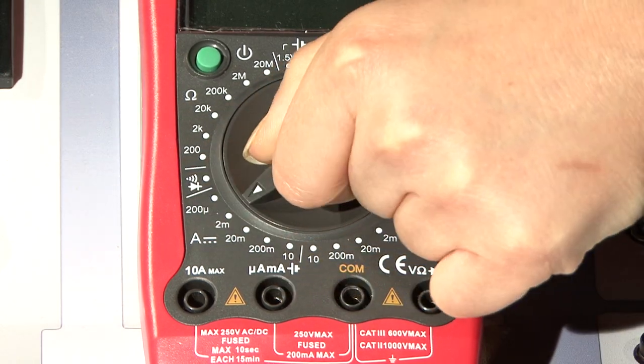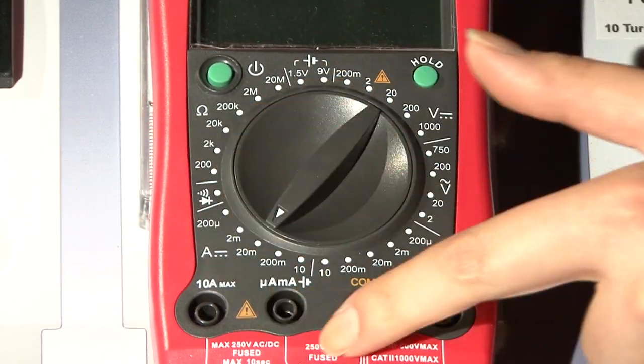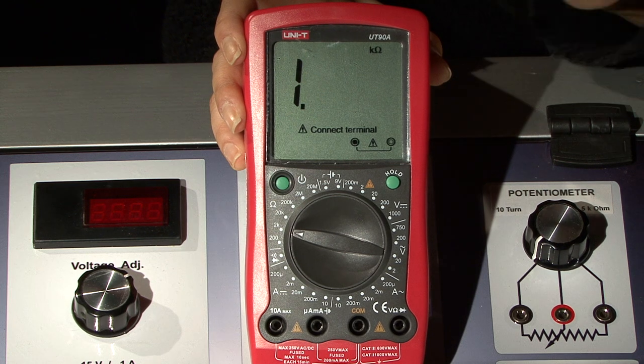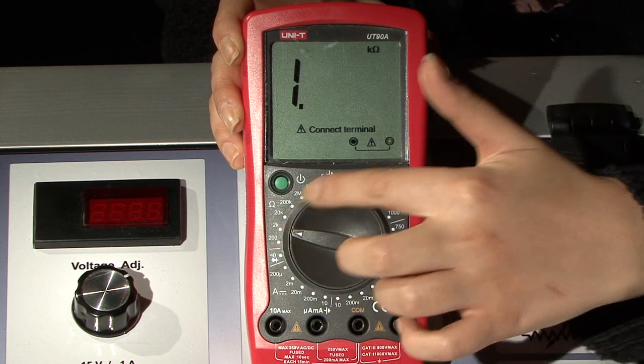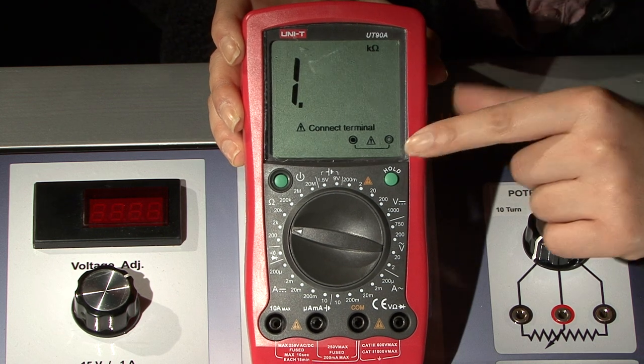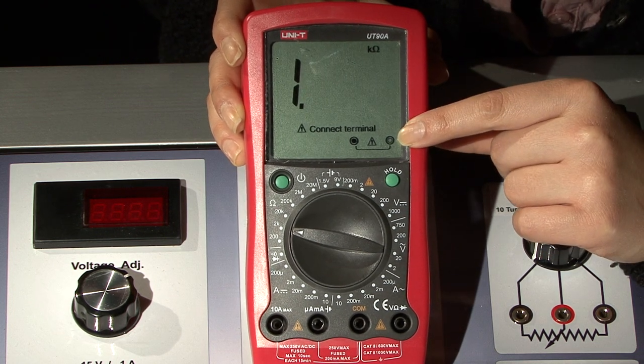And this part for measuring current in DC circuits. Let us now measure the resistance of a resistor. First, we adjust the multimeter. We see on the display where each cable should be connected.